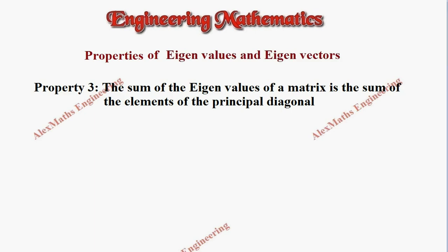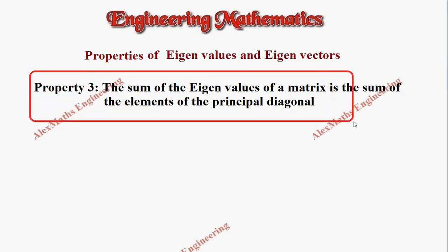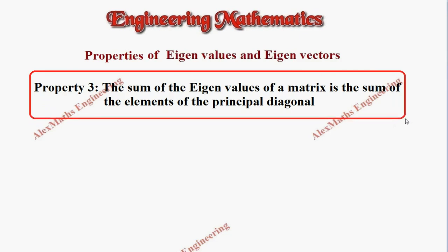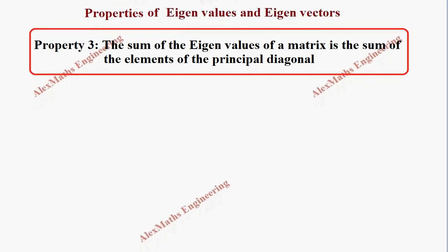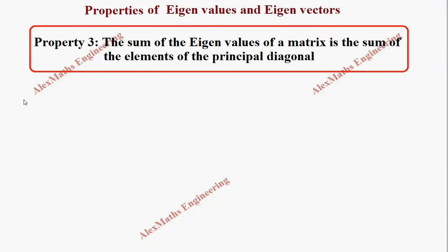Hi students, this is Alex here. In this video, we are going to prove the property that the sum of the eigenvalues of a matrix is the sum of the elements of the principal diagonal. Let's consider a 3 by 3 matrix.